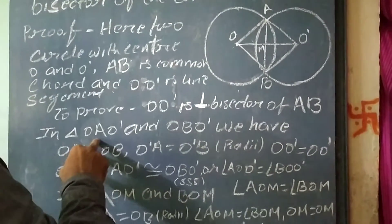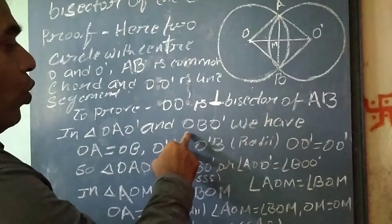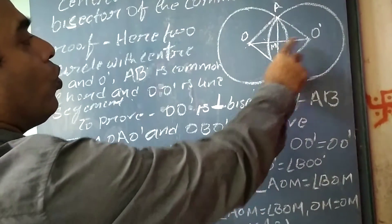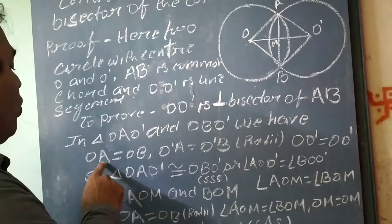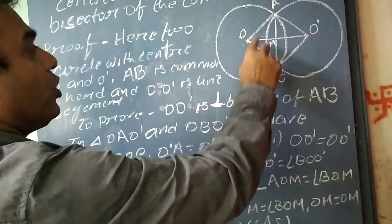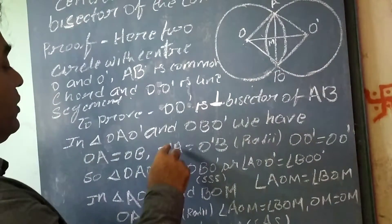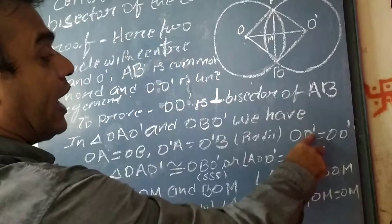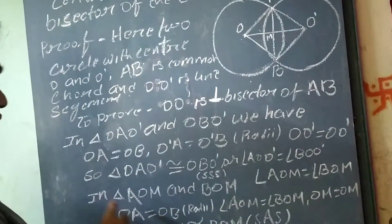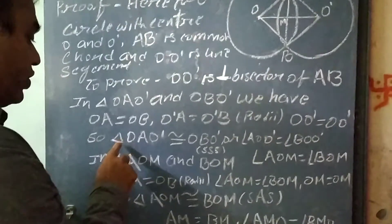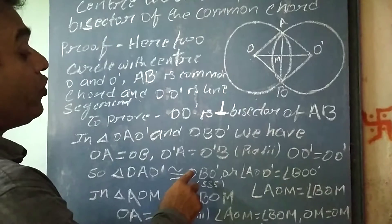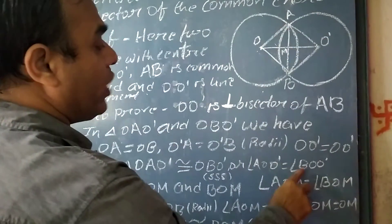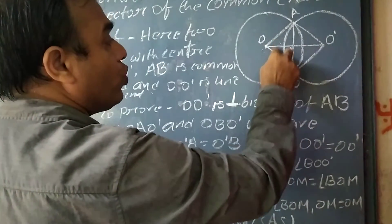Now, in triangles OAO dash and OBO dash, we have: OA equal to OB, that is the radii of the circle, and O dash A equal to O dash B, also radii, and OO dash is common. So triangle OAO dash is congruent to triangle OBO dash, and therefore angle AOO dash is equal to angle BOO dash.